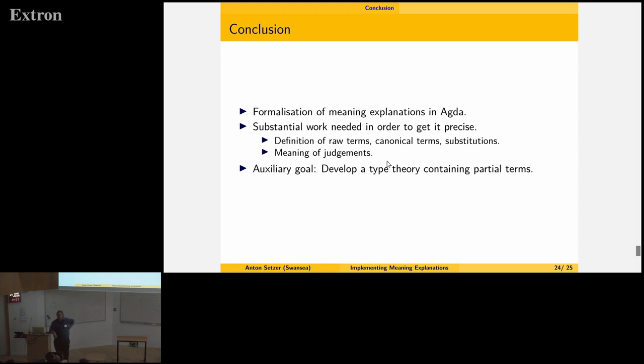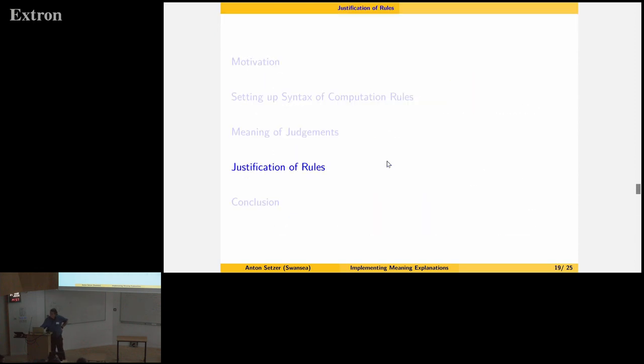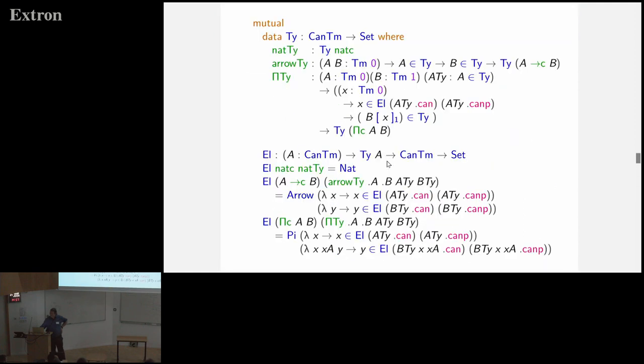So in the definition of the inductive recursive definition, I mean the slides you could show, did you have to prove some kind of proof irrelevance like that - that the semantics of a type is determined already by its expression and not by its derivation that it's in this type family? Did you have like some kind of proof? Did you have to show that it doesn't depend on how it enters the type family here?